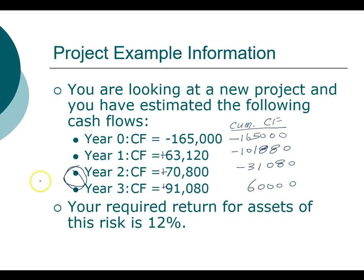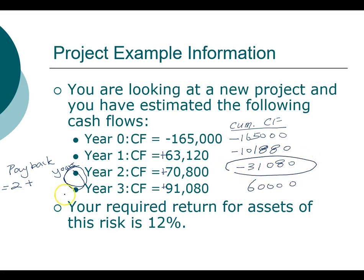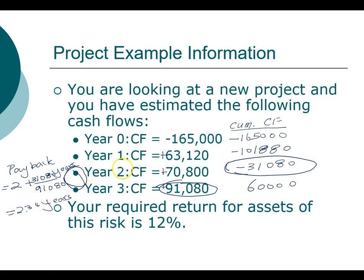We know the payback occurs right between year two and year three, so it takes at least two years. You can get more precise by assuming cash flows occur evenly throughout the period. To find how far into year three: take the amount still outstanding at the end of year two — $31,080 — divided by the amount expected in year three — $91,080. That ratio gives a payback period of approximately 2.34 years. The most important takeaway is that this project takes just over two years to pay back.